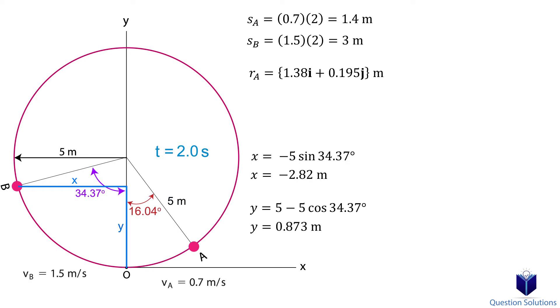If you draw out the triangles, it might help you visualize it better. Now we can write our position vector for particle B.